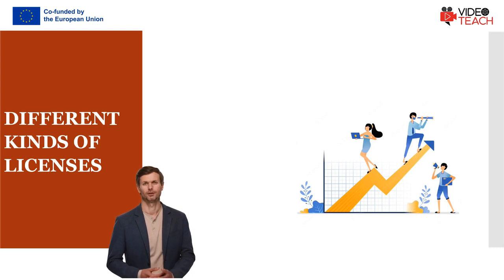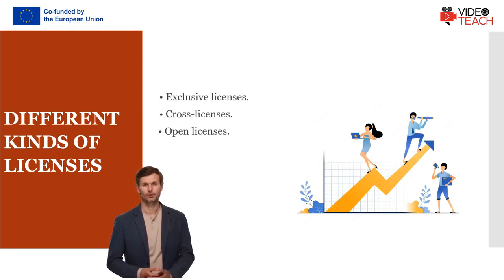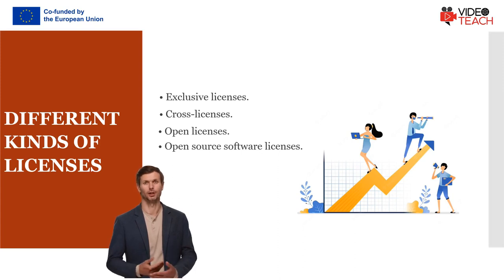This prevents vendors from exploiting their monopoly power. There are several kinds of licenses: exclusive licenses, cross licenses, open licenses, and open source software licenses. Royalties, on the other hand, refer to payments from a licensee to a licensor for the use of intellectual property.